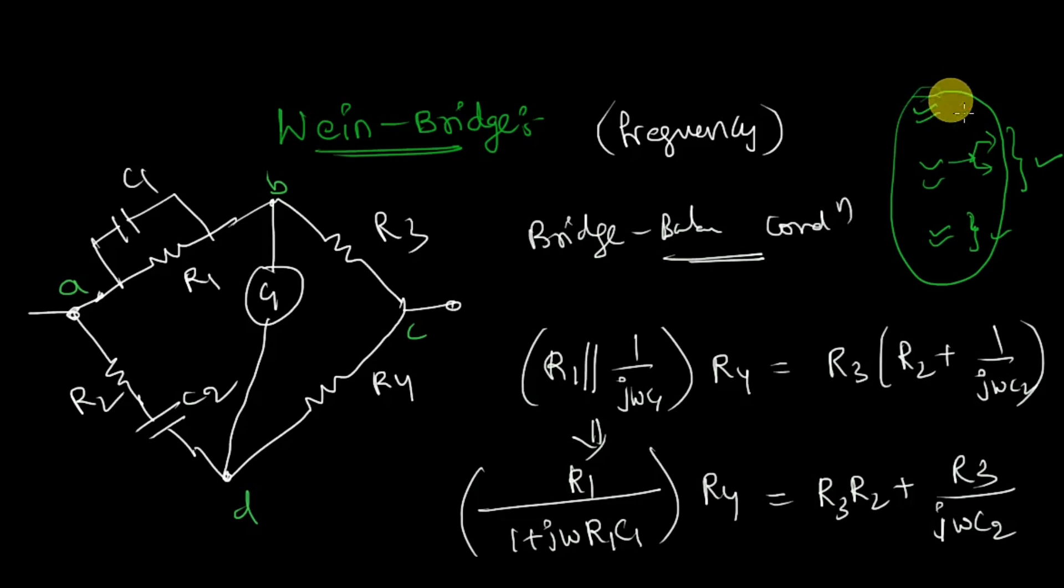So with these seven videos you can completely attend any question that can come in this bridges concepts. The problems also will be the same. Instead of these unknowns, they might give the direct values, but my suggestion is to solve the question with these unknown values so that you can get the generalized expression for the required unknown values that you have to find, and then you can substitute these values and get the final result.